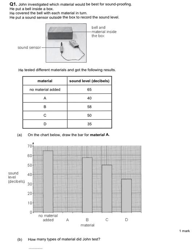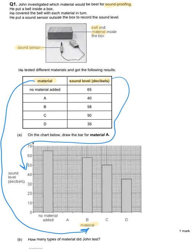This first question is about sound and specifically about soundproofing. They're doing an experiment where they've got a bell inside a box made of different materials, and there is a sound sensor on the outside to measure the volume of sound being collected. We have a table of data with material in the first column and sound level in decibels in the next column, with a bar chart below. The material goes on the x-axis and the sound level in decibels goes on the y-axis — remember, y goes to the sky and x is a cross.